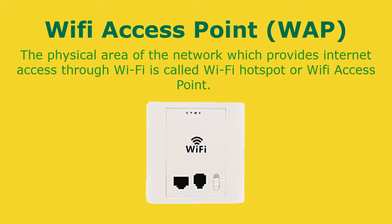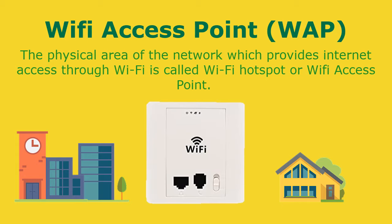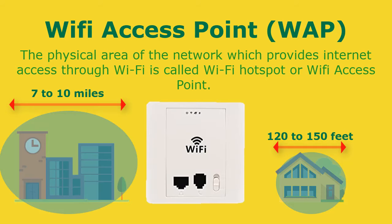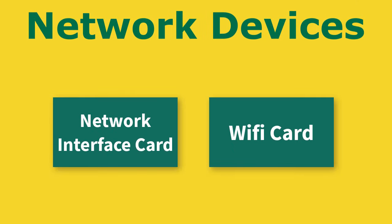Wi-Fi access points are the physical area of the network which provides internet access through Wi-Fi. They are also called Wi-Fi hotspots. Hotspots can be set up at home, office, or any public space, and are themselves connected to the network through wires. Every access point has a range of around 120 to 150 feet for home, or much larger for school or university, and only devices within this range can connect. There can also be a limit on the number of computing devices that can connect.